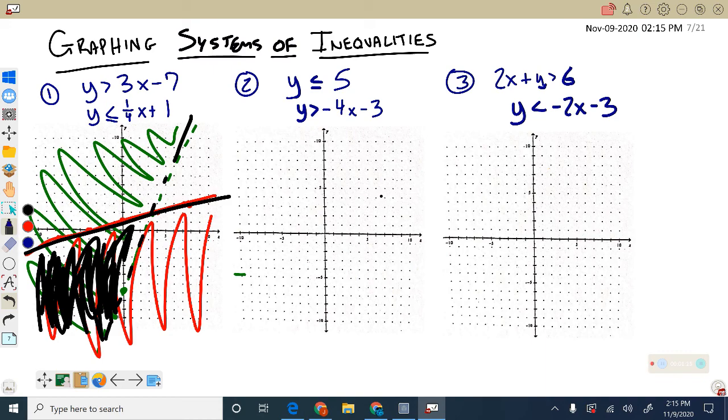Number 2 works very similarly. First one says y is less than or equal to 5. I'm going to look at this one a little bit differently just to show you another way to do it. I'm going to hold my shading for now. I know I'm going to shade below, but I'm going to hang on to that for a minute.